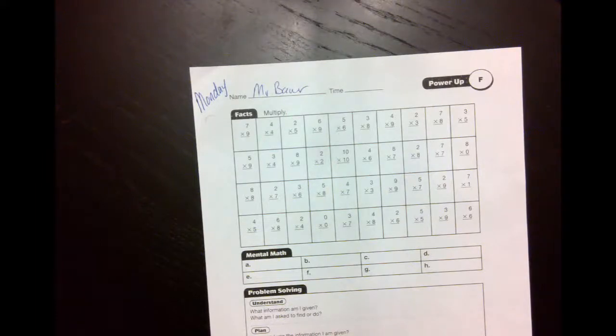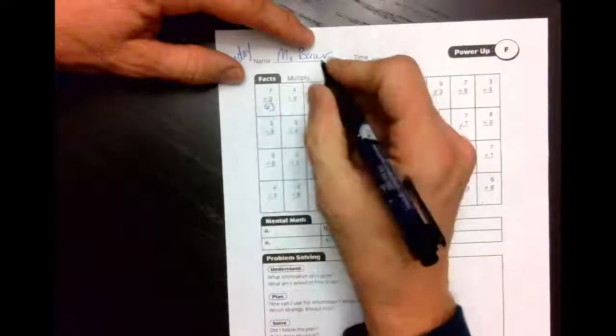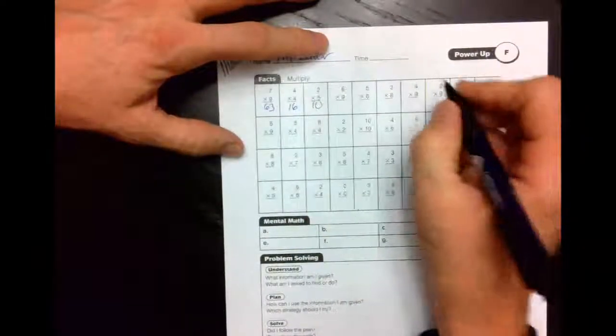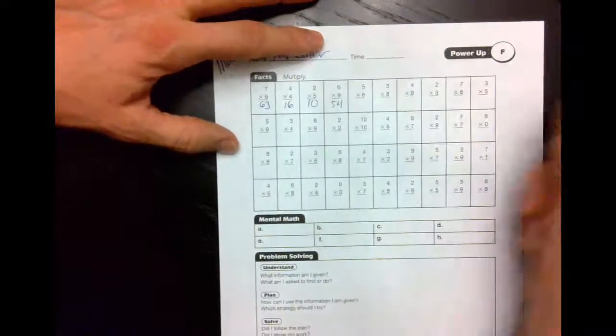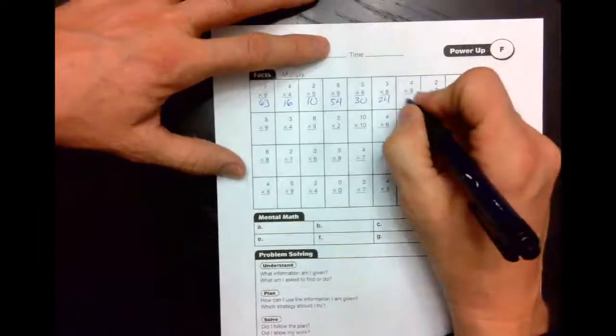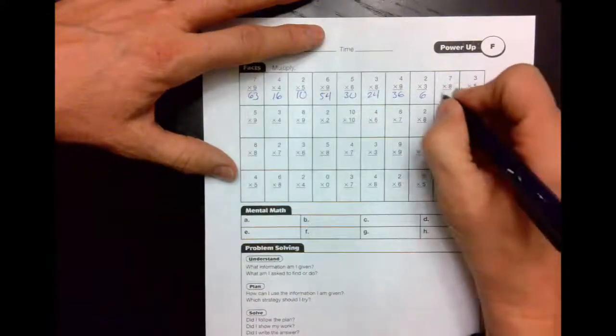It's multiplication. We're going to head across. 7 times 9 is 63, 4 times 4 is 16, 2 times 5 is 10, 6 times 9 is 54, 5 times 6 is 30, 3 times 8 is 24, 4 times 9 is 36, 2 times 3 is 6, 7 times 8 is 56, 3 times 5 is 15.